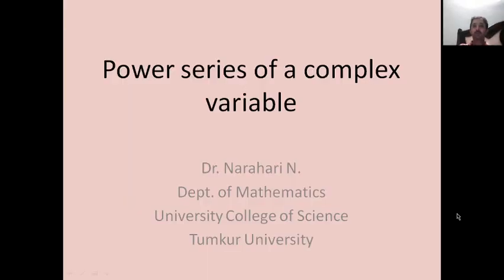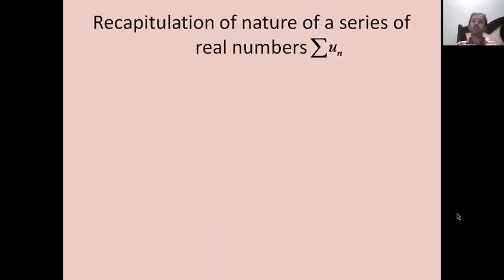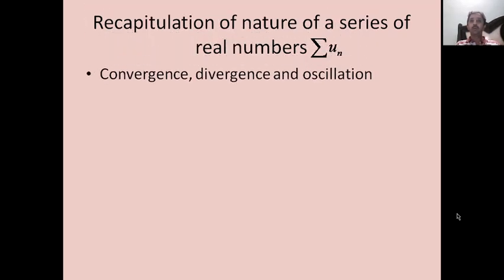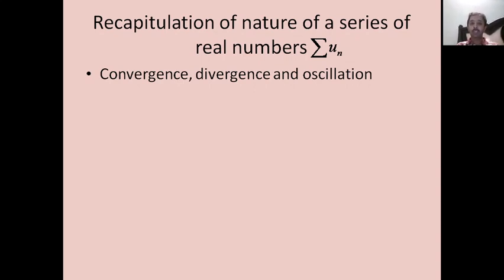Hi everyone, good afternoon. In this video we are going to discuss the nature of a power series of a complex variable. Before that, we will start with a small recapitulation of the nature of a series of real numbers sigma u_n. A series of real numbers sigma u_n can either be convergent, divergent, or oscillatory depending on whether the sequence of nth partial sums S_n is convergent, divergent, or oscillatory, where S_n is given by u1 + u2 + ... + u_n.